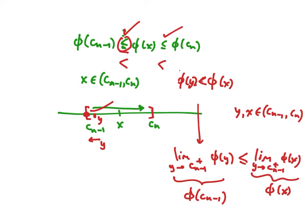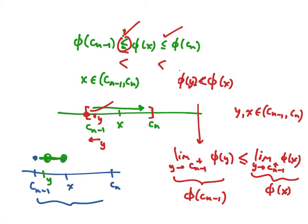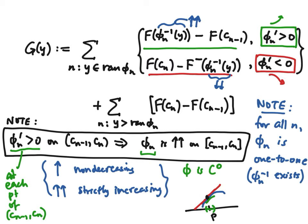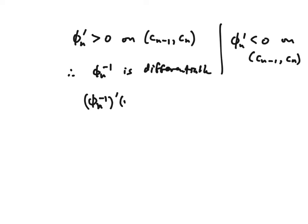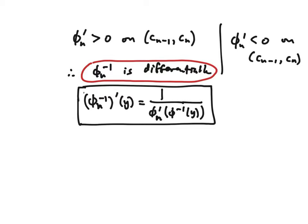So we can conclude that the strict increasing property holds on the entire closed interval. The inequalities I wrote are actually strict. If they were equal for some given x — the video ends here mid-explanation — but the argument establishes that φₙ is strictly increasing on the full closed interval, which is what we need for the inverse function and the subsequent formula for G(y) to be well-defined.